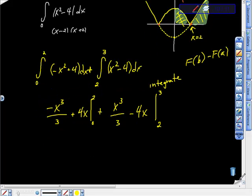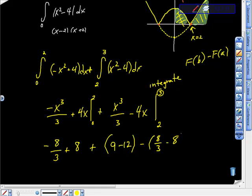And now I'm going to start using the fundamental theorem of calculus here. We'll do two: it'll give us negative eight over three plus eight. And f of zero is zero. Plus, now we'll take three, which will give us nine minus twelve. I'm just taking f of three right now. Minus f of two, which is eight thirds minus eight.